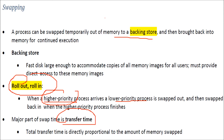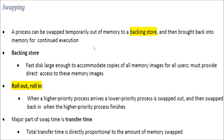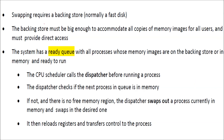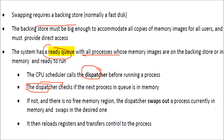It involves a certain transfer time because you are actually transferring data and not doing any useful work. Swapping requires a backing store — a place where you can put processes, like a hard disk or tape drives. The system has a ready queue where all processes ready to run are listed. The CPU scheduler calls the dispatcher, which checks if the next process in queue is in memory.